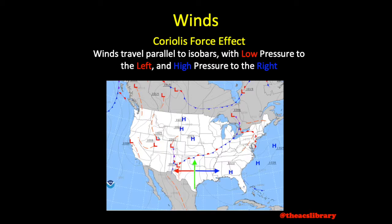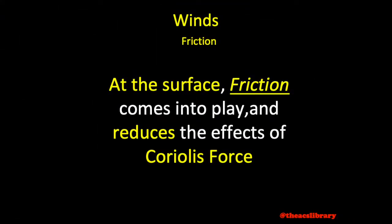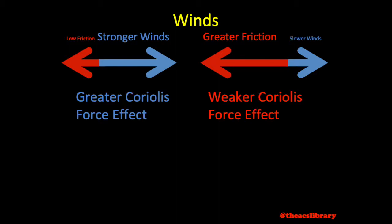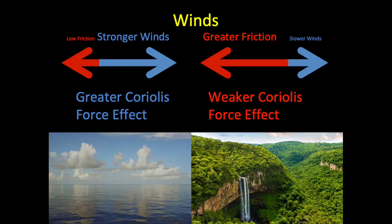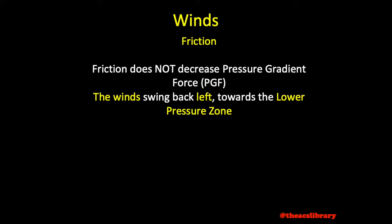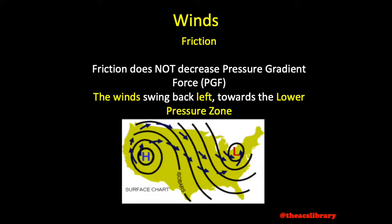This parallel-to-isobar behavior is what is seen above the friction level at higher altitudes. At the surface, however, friction comes into play, reducing the effects of Coriolis force. The greater the friction, the slower the winds, and the slower the winds, the weaker the Coriolis force. Terrain such as forests will slow the winds much more than an ocean would. The greater friction does not decrease PGF, so the greater pressure gradient force pushes the winds to the left towards the lower pressure zone at an angle dependent upon the friction of the surface. Winds will be carried left at an angle of roughly 10 degrees over water, with that angle increasing as the surface becomes rougher.